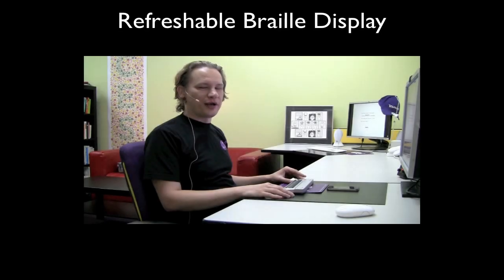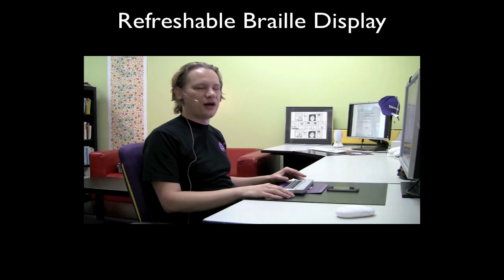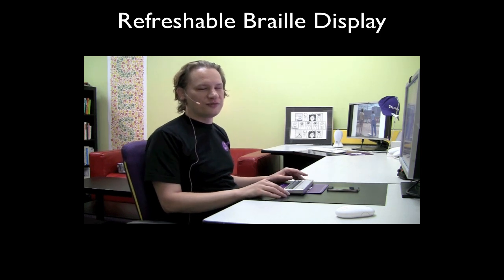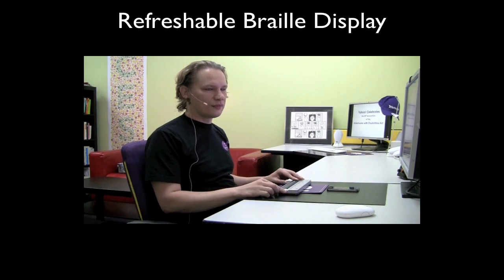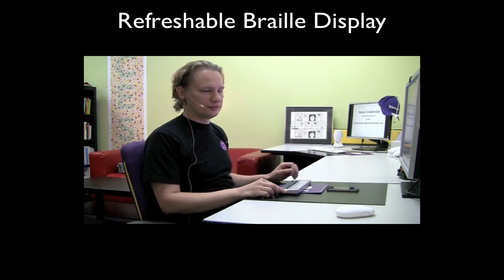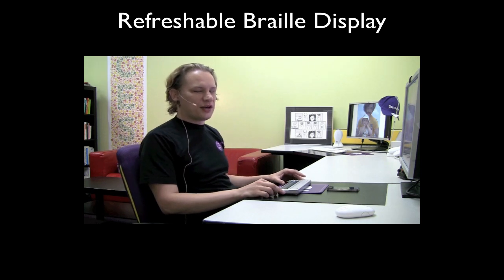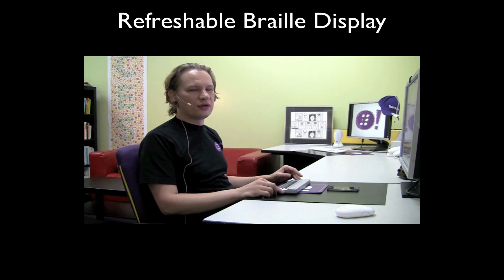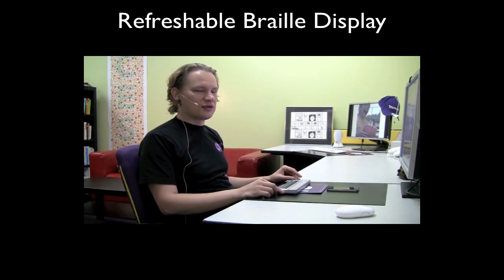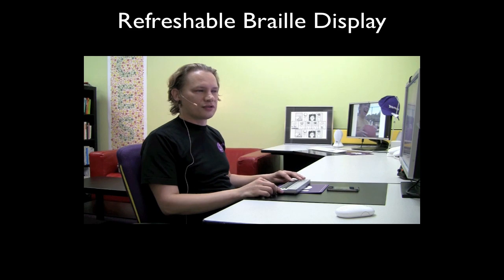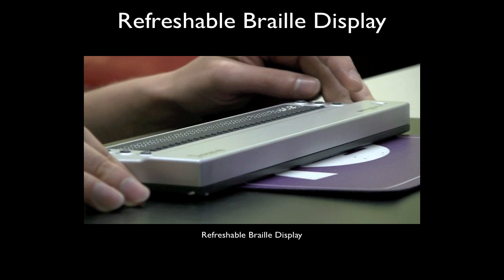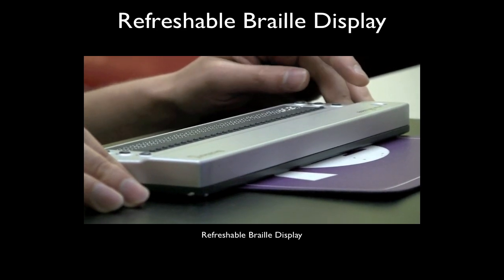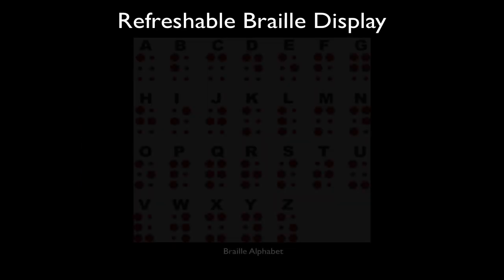Hi, I'm here to tell you about Braille Display and Apple iPhone 4 and how these two devices can work together. This is Braille Display and this is the iPhone. I've connected Braille Display via Bluetooth to the iPhone and I will be driving the iPhone without ever touching its screen. Braille Display is a device that communicates the text on the screen — in this case the iPhone screen — via the alphabet known as Braille.